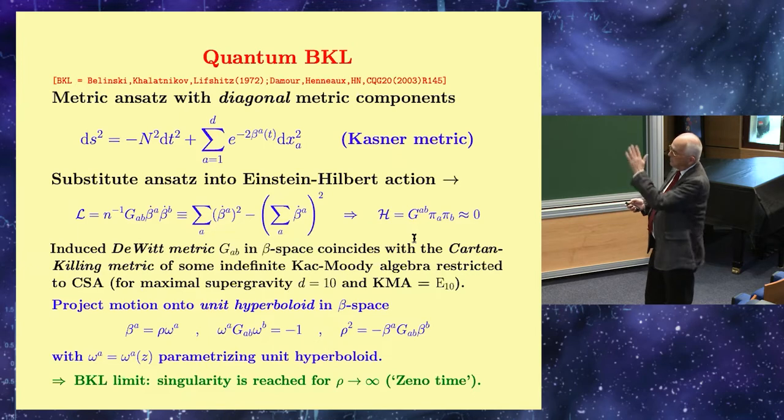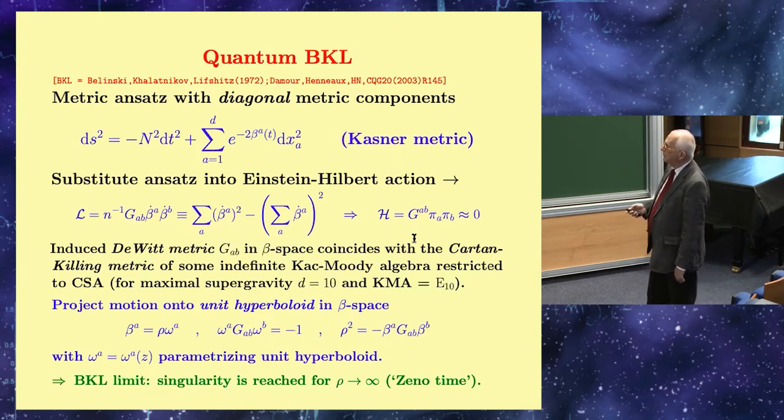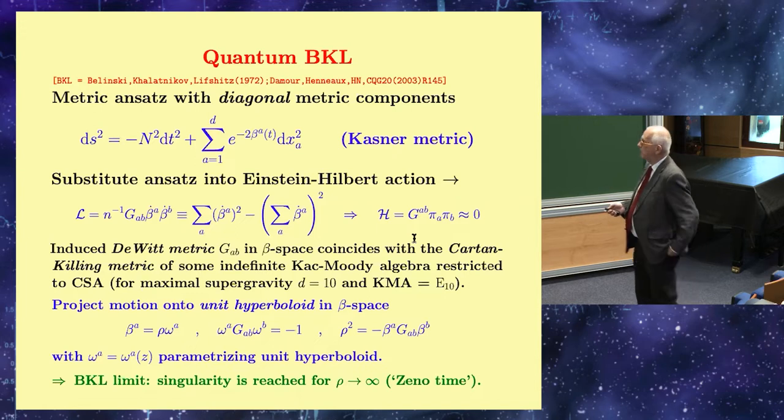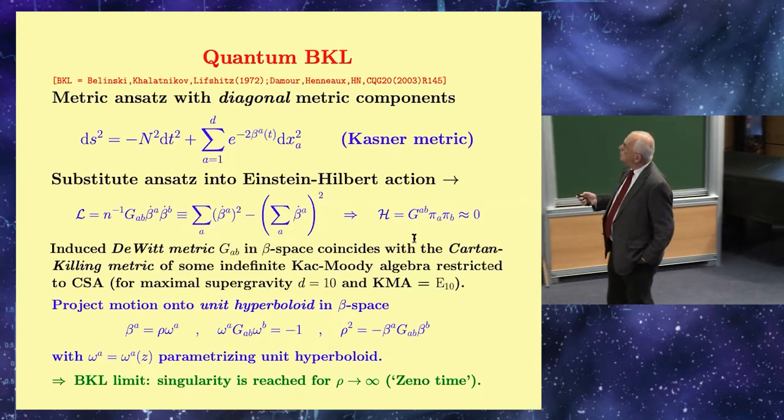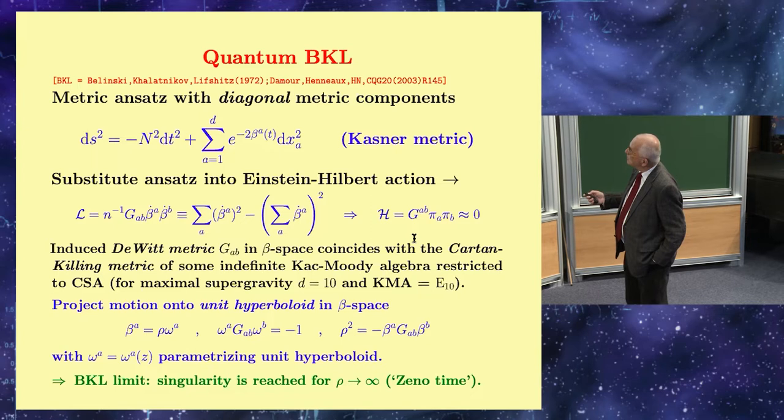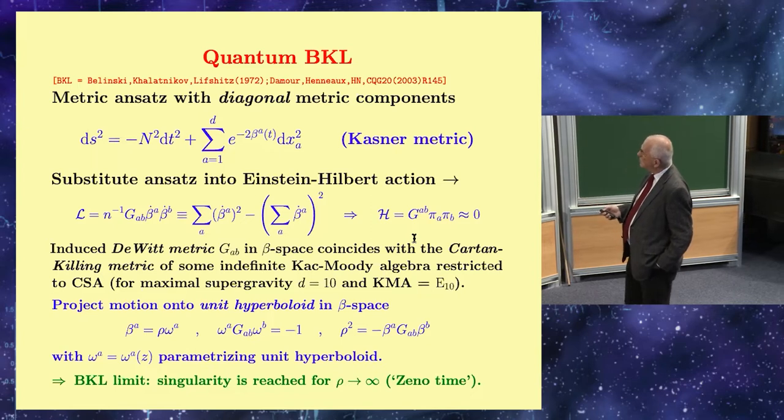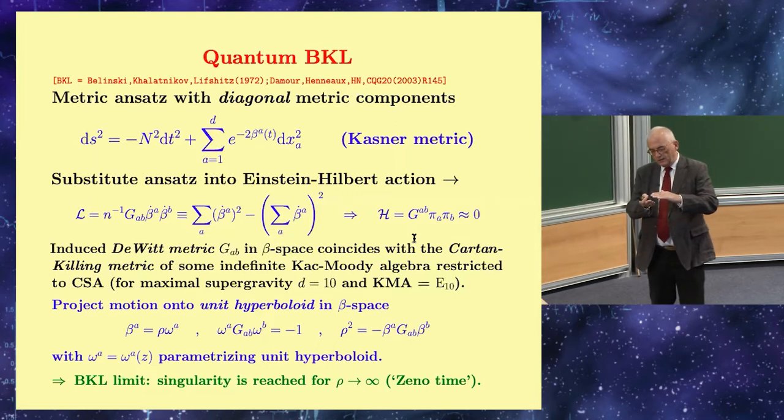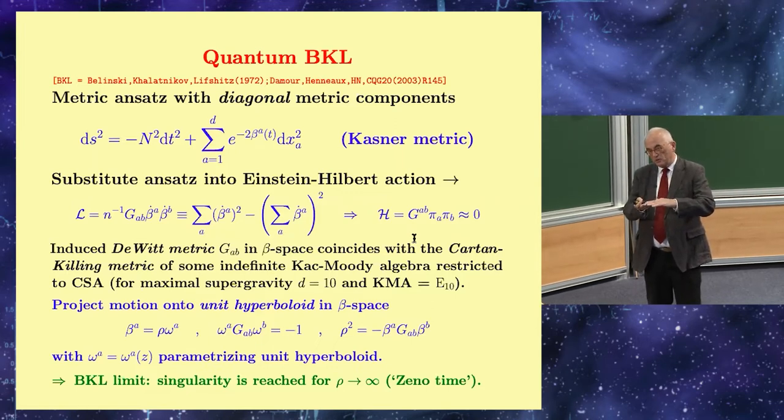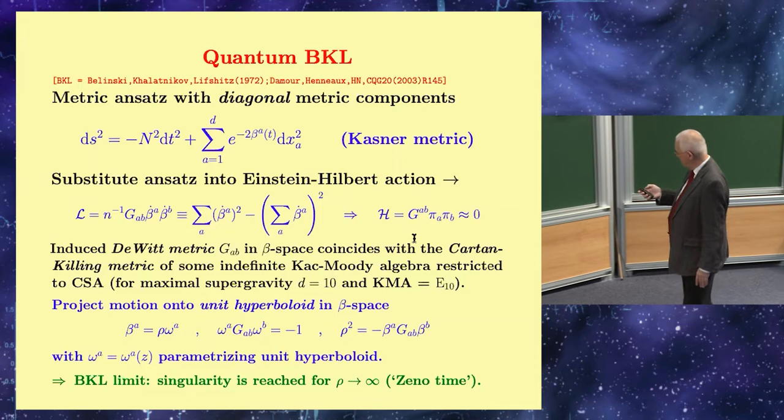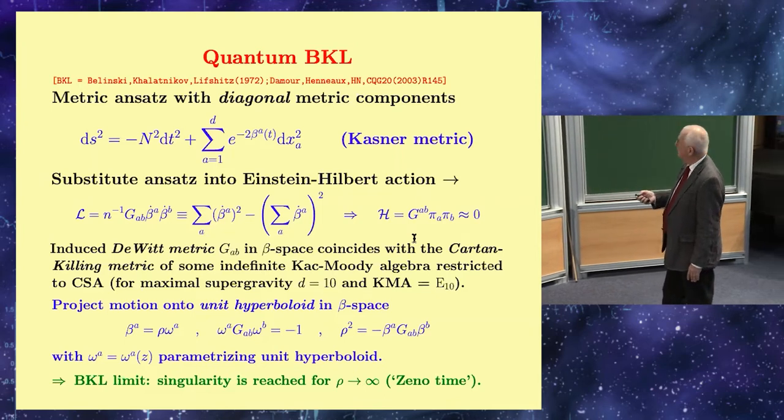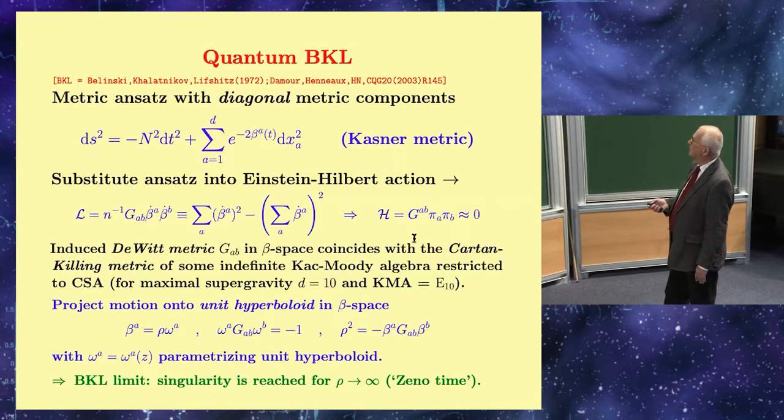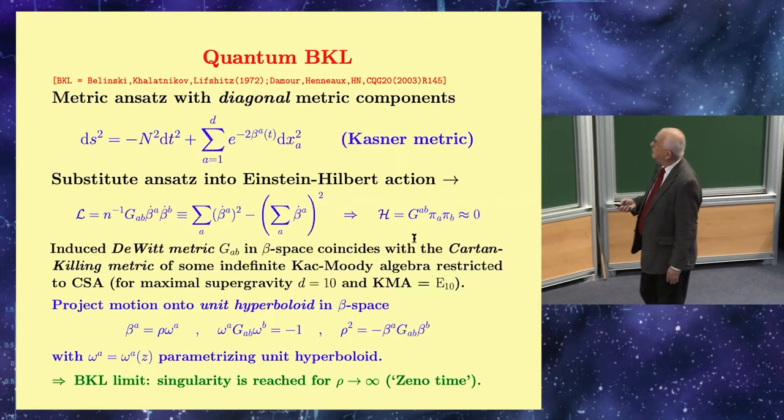It has turned out to be convenient to describe the motion, this relativistic motion, which in beta space is just straight motion on null lines in the forward light cone. It's convenient to project this motion onto the unit hyperboloid in the forward light cone by means of this projection. We have coordinates beta. Most of my talk will be for E10, that means 11-dimensional supergravity, which means 10 of these scale factors. So we project these 10 vectors onto a 9-dimensional unit hyperboloid.